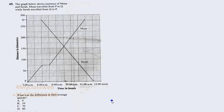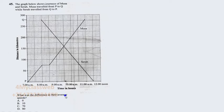I would like to use the shortest time possible to answer this question for the sake of the person who asked it, plus any other person who may have the same issue. Before we answer, let us go through the question. The question states: the graph below shows the journey of Musa and Seller. Musa traveled from point P to Q, while Seller traveled from Q to P. The question asks: what was the difference in their average speeds?